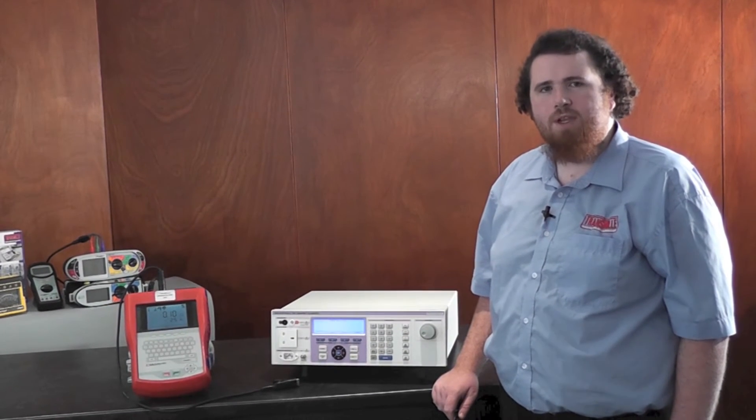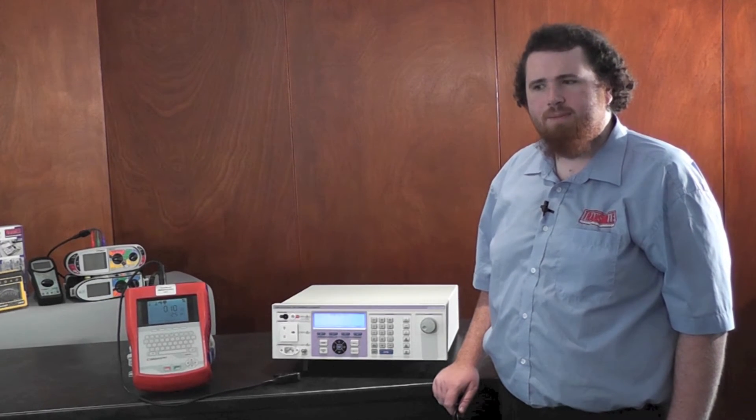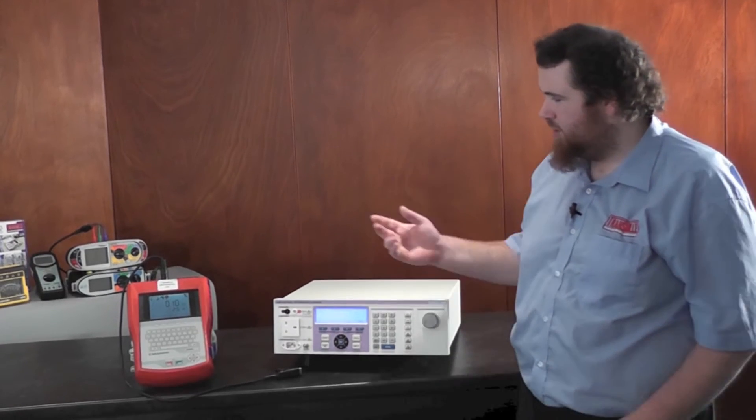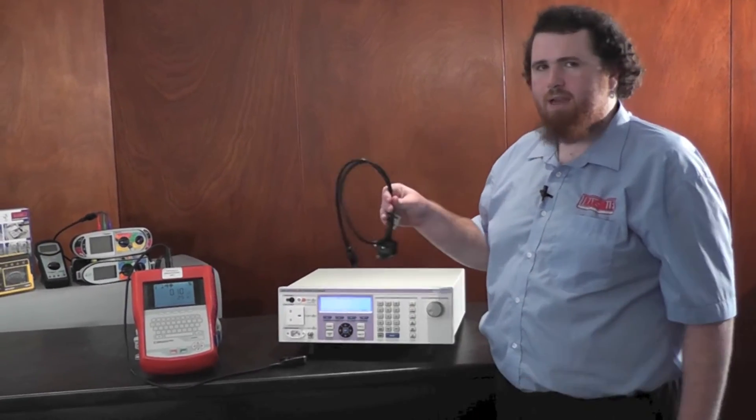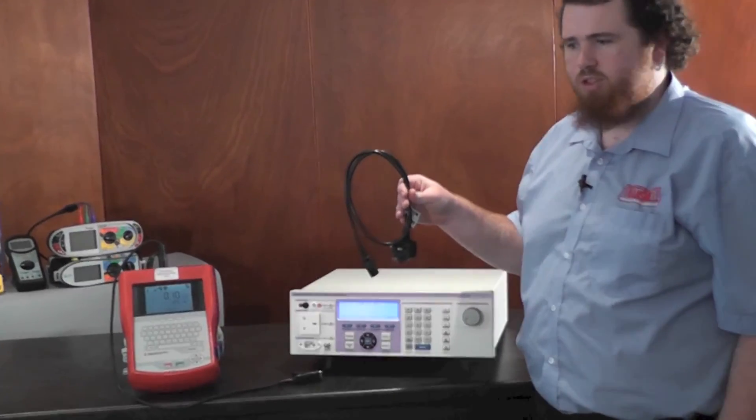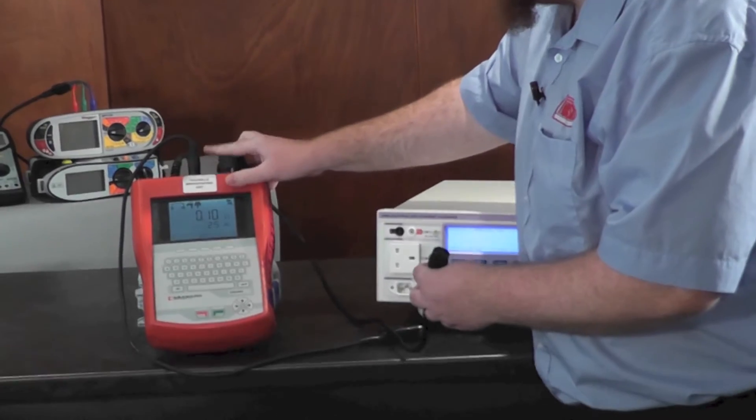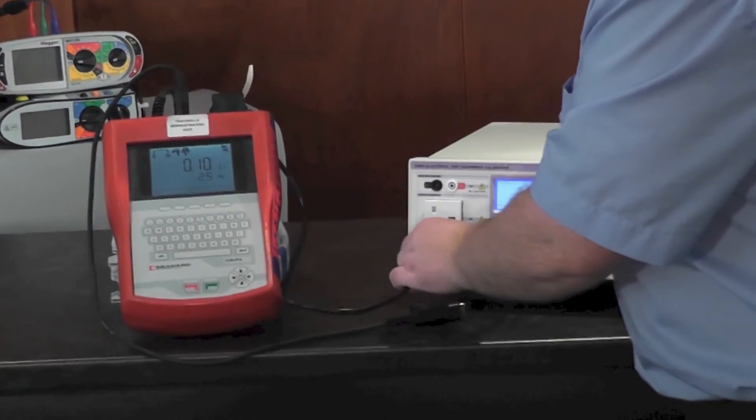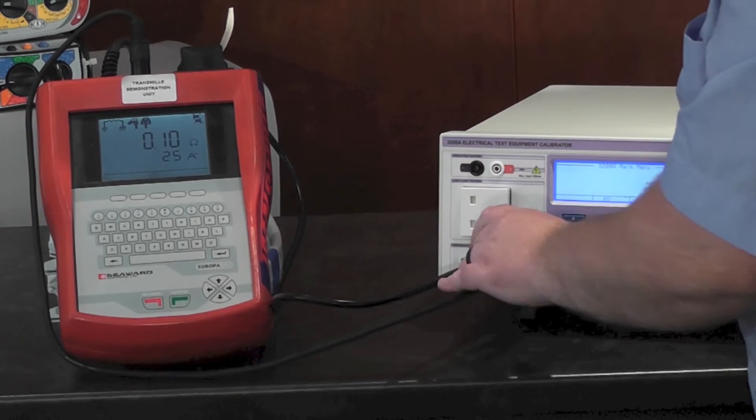The 3200A contains a comprehensive set of features for calibration of PAT testers. To show how simple calibrating a PAT tester with the 3200A, I'm going to calibrate the bond resistance on this unit. Using the calibrated lead supplied with 3200A, I'll connect up the PAT tester and connect the earth clip to the earth clip provided.